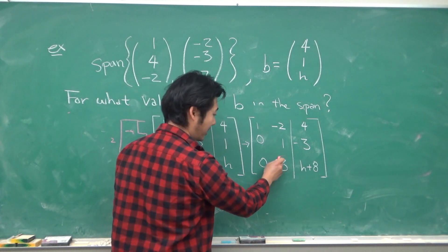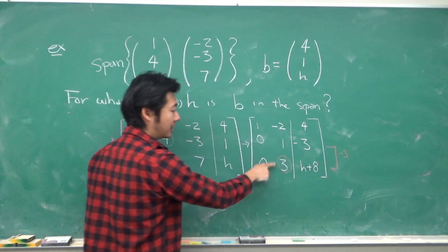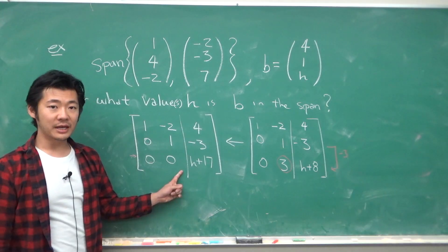Next, we want to get rid of this entry. And so we can multiply this row by negative 3 and add it into the third. We get something like this.